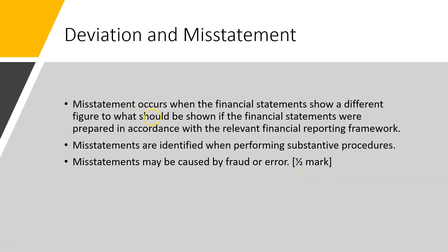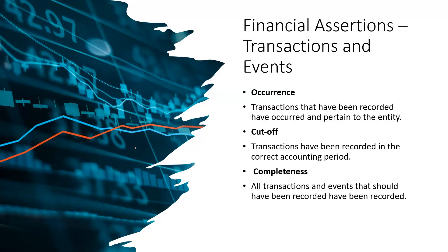As opposed to misstatement - the lovely thing about misstatement is we are very clear about the financial reporting framework. You could argue there is a deviation from the relevant financial reporting framework, but don't use the word deviation - just say there are differences. You can have a difference due to fraud or error, usually due to error, or a difference in opinion in terms of judgment. Typically, the whole point of an audit is to carry out substantive tests to identify misstatements.